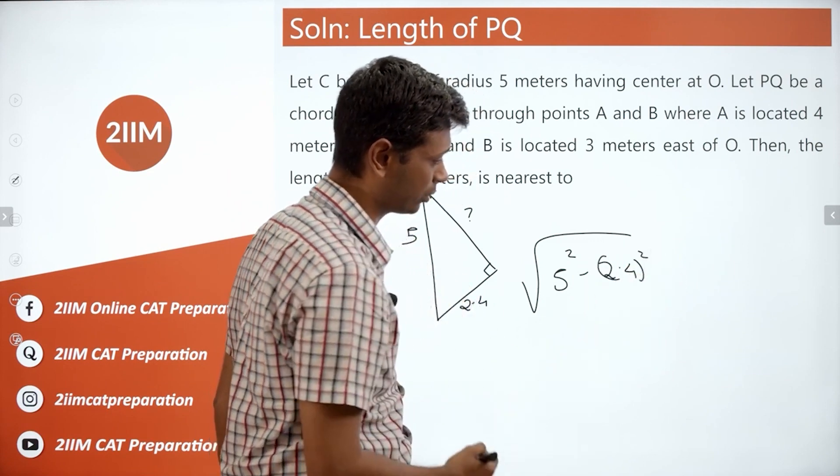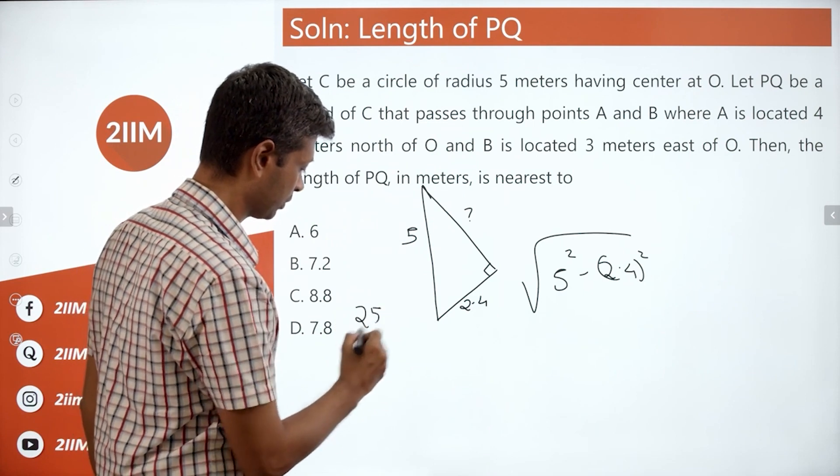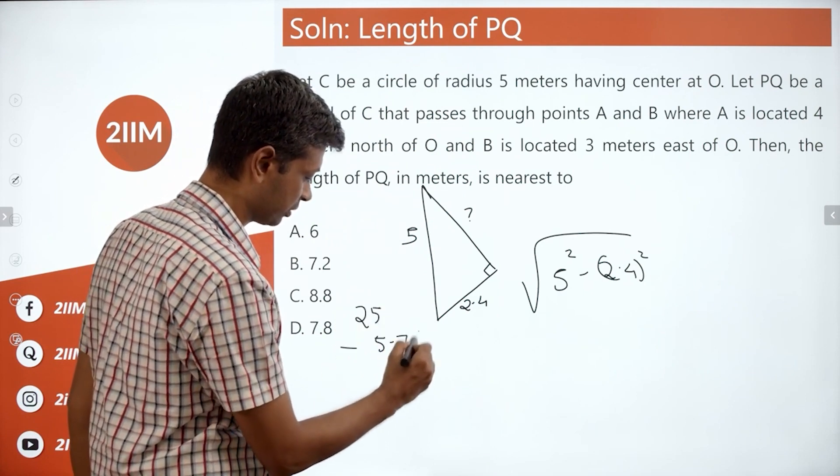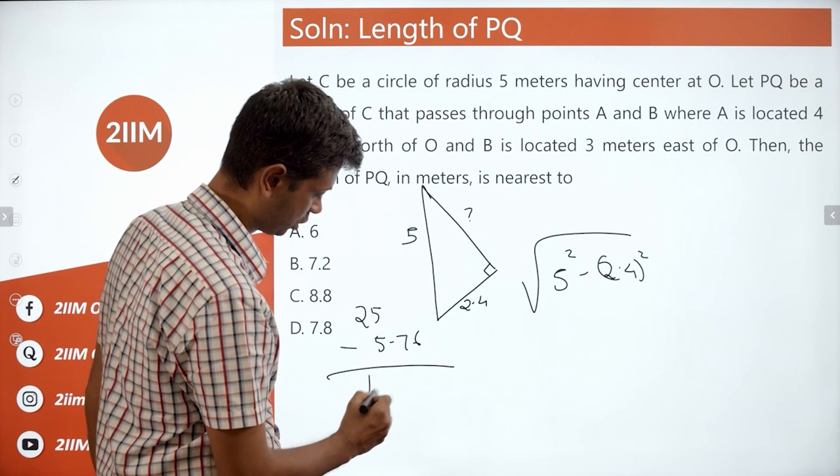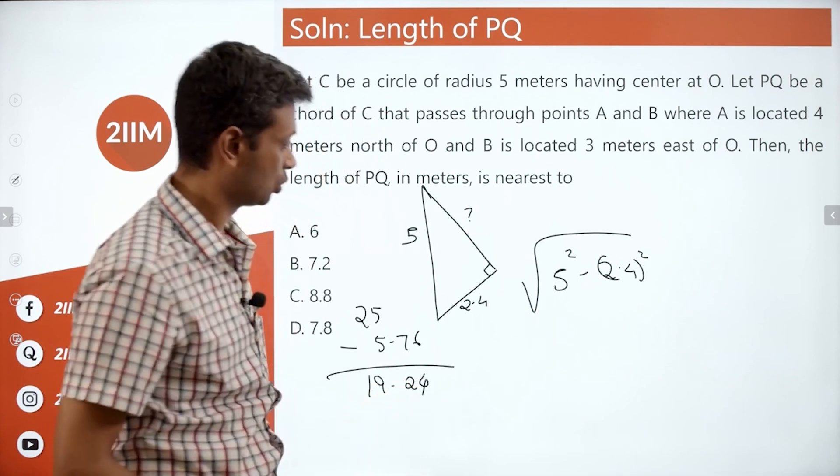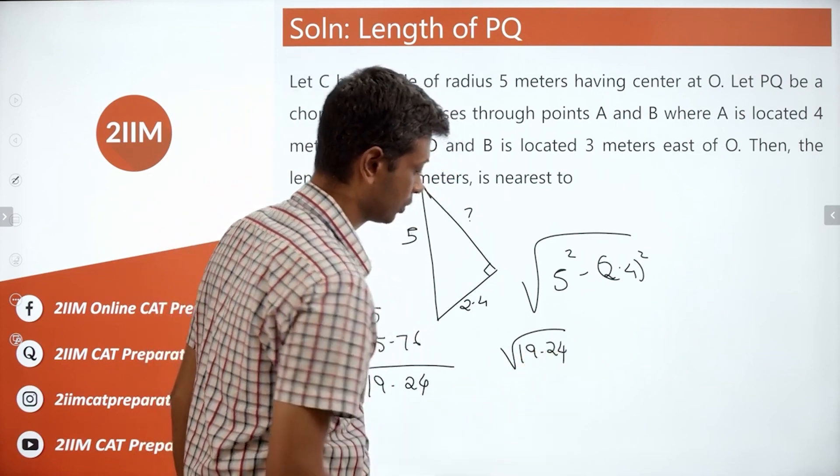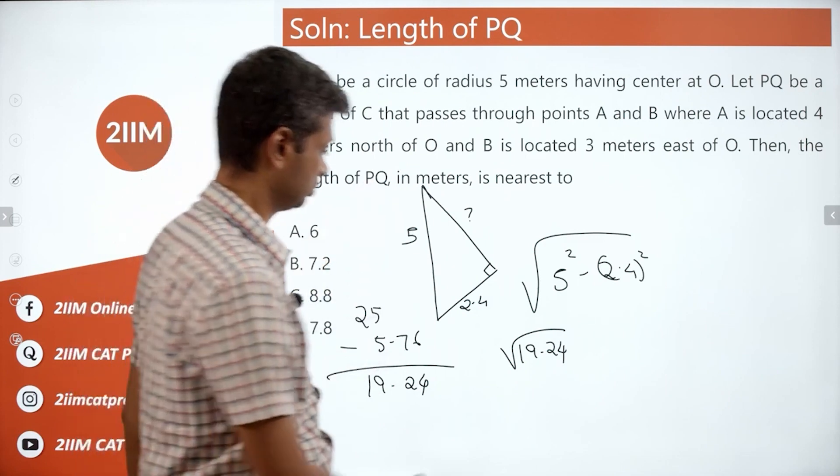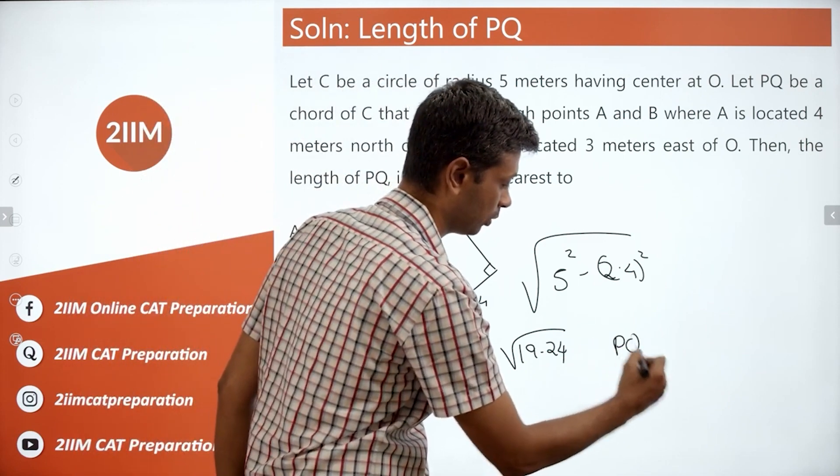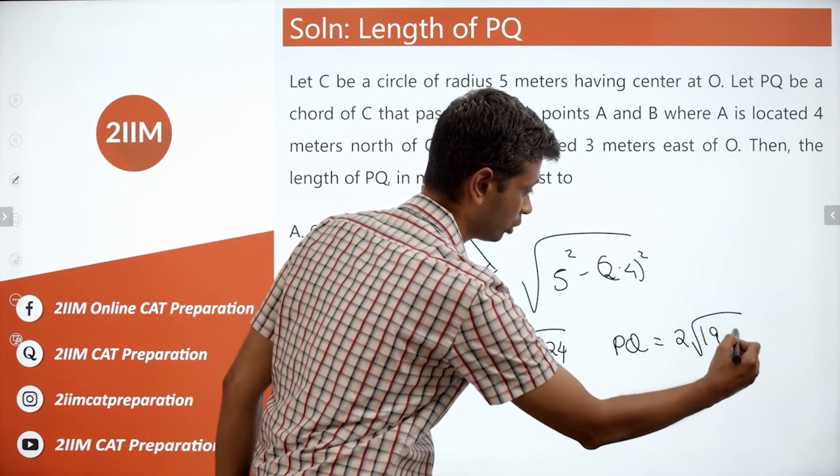So this is square root of 5 square minus 2.4 square. 2.4 square is 5.76. So 25 minus 5.76, which is 19.24. So this distance is square root of 19.24. The distance PQ equals 2 times square root of 19.24.